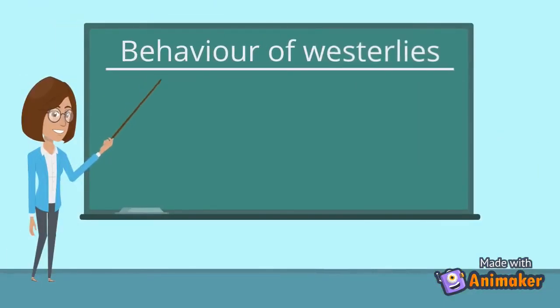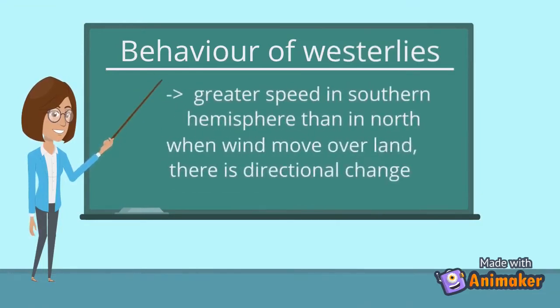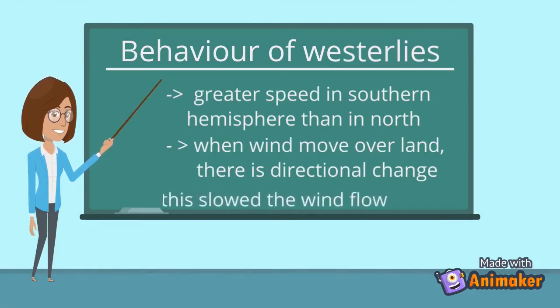Next, Westerlies tend to move at greater speed in the Southern Hemisphere compared to the Northern Hemisphere. When wind moves over land, there is a directional change in the Westerlies pattern. This change slows the wind flow of Westerlies.